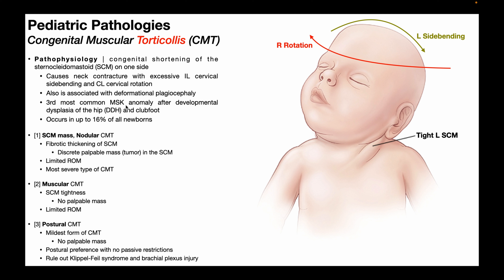Torticollis is often associated with a condition called deformational plagiocephaly, which we'll be talking about on the next slide. Note that this is the third most common pediatric MSK anomaly after developmental dysplasia of the hip and club foot, and it occurs in up to 16% of all newborns.